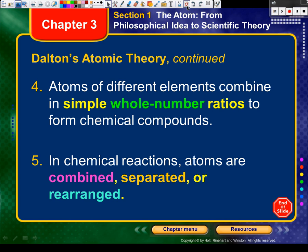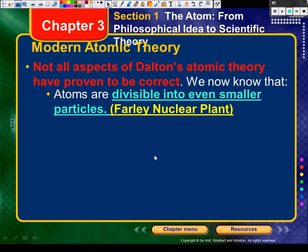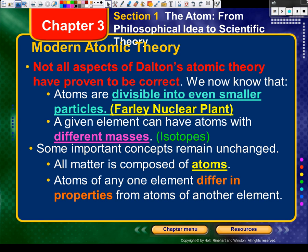So holistically, how good did Dalton do? Three out of five — that's a 60, but in 1803 that's really good. He missed number two and number three. Not all aspects of Dalton's atomic theory have been proven correct: we know atoms are divisible into smaller parts, can be created in a lab, and a given element can have atoms with different masses. Some important concepts are still true: everything is composed of atoms, and different elements have different properties — iron and lead are completely different, just like aluminum and carbon.